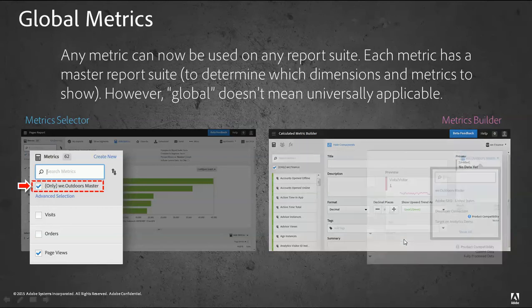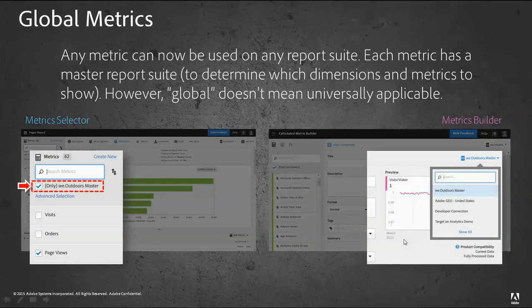On the metric side, if you're building a calculated metric and you want to choose a different report suite, you can basically go to the top there, change that. You'll get a drop-down of the different report suites within the company.